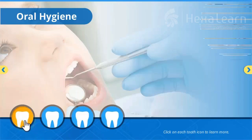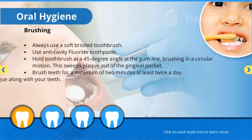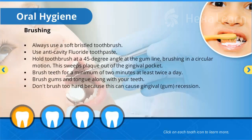Brushing: always use a soft bristled toothbrush and anti-cavity fluoride toothpaste. Hold the toothbrush at a 45-degree angle at the gum line, brushing in a circular motion. This sweeps plaque out of the gingival pocket. Brush teeth for a minimum of two minutes at least twice a day.